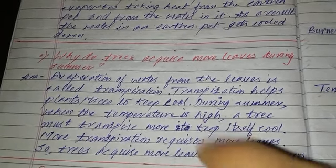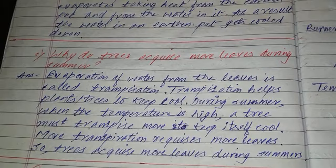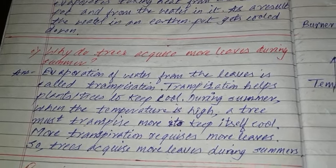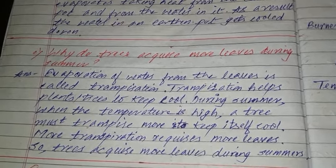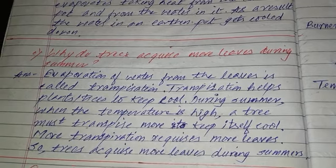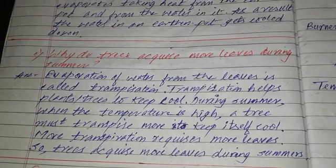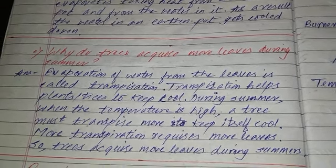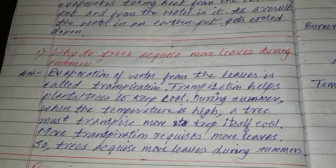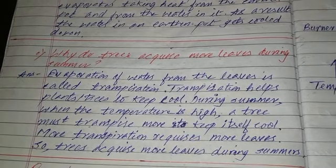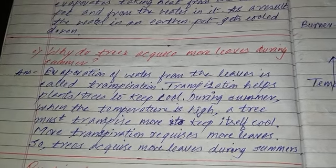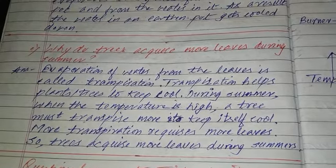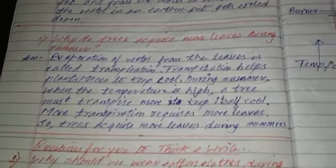During transpiration, when water from the leaf surface evaporates, it takes the heat of the plant with it, and the plant feels cool. That is why plants grow more leaves in the summer days so that they remain cool. That is the reason behind why trees acquire more leaves during summer.